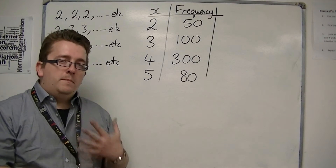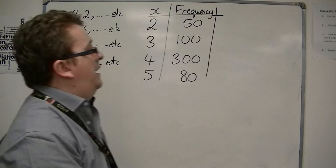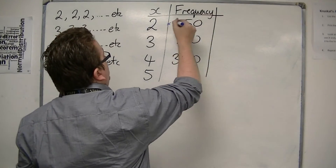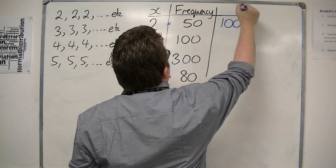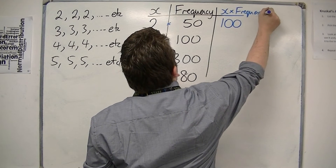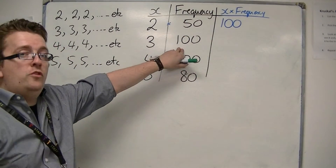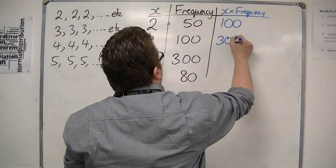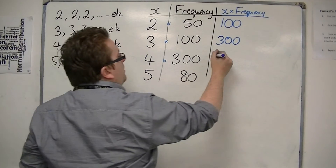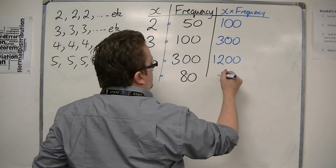Now, if you were going to work out the mean, what you'd need to think about is: I'm going to need to add them all up somehow. I know that I've got fifty twos, so fifty times two would be a hundred. So I'm going to create this new column of x times the frequency. We have two lots of fifty is a hundred. Then I've got a hundred threes, so they would all add up to three hundred.